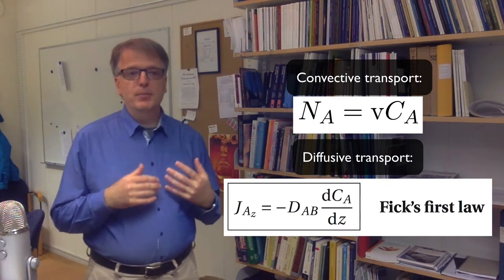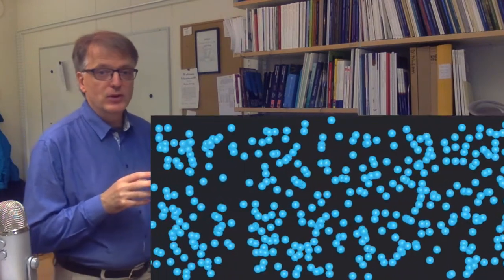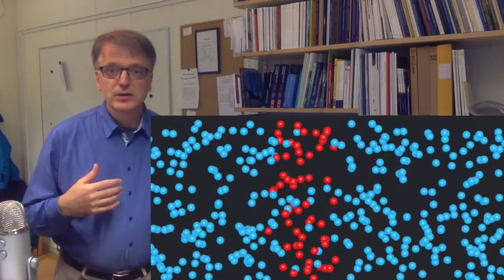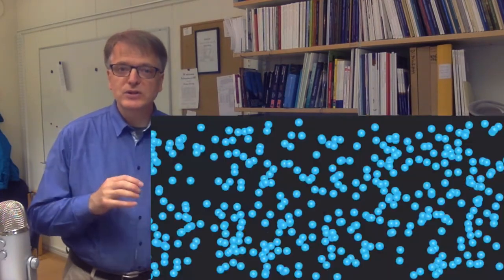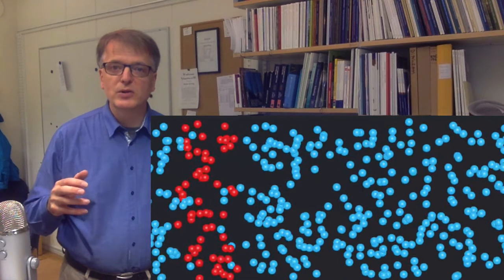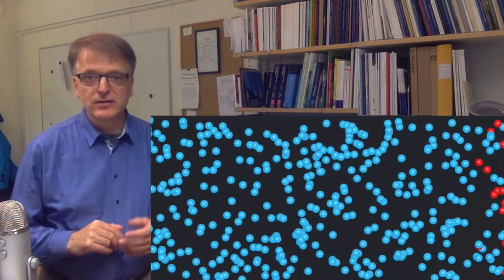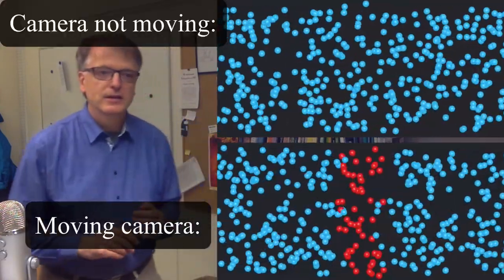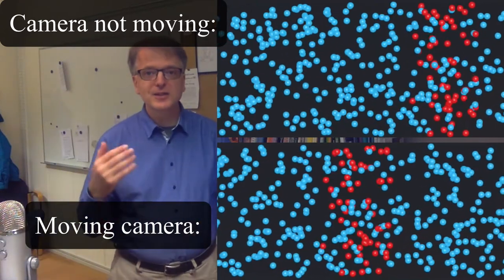So what happens if we have both convective and diffusive transport at the same time? When we consider these blue and red molecules, we have a convective transport in one direction, and the red molecules are spreading into the blue molecules as they travel along the pipe. That looked rather complicated, didn't it? So what happens if we let the camera follow the flow? Well then instead it looks like this, and suddenly life seems a bit simpler again.